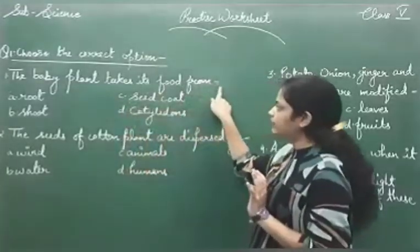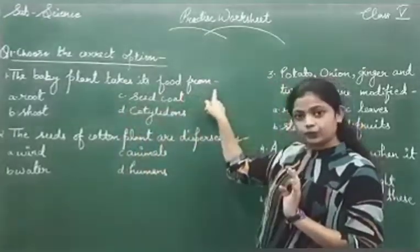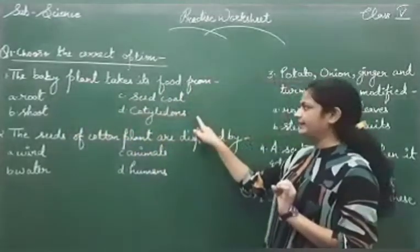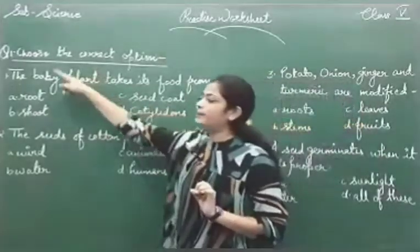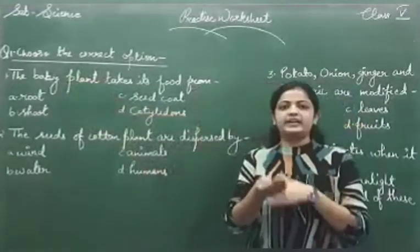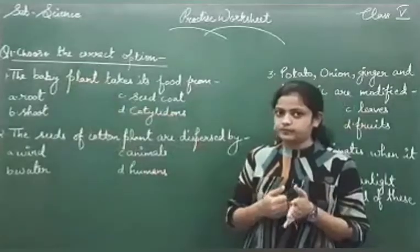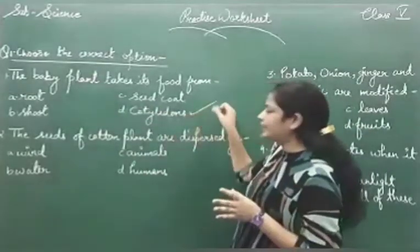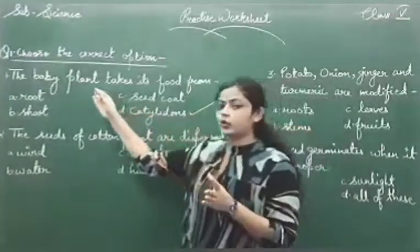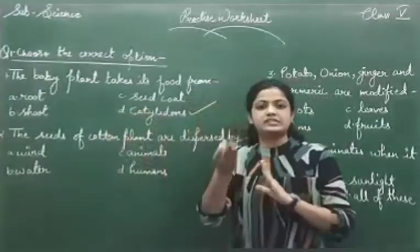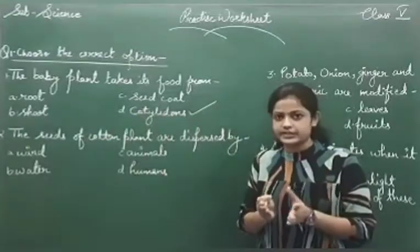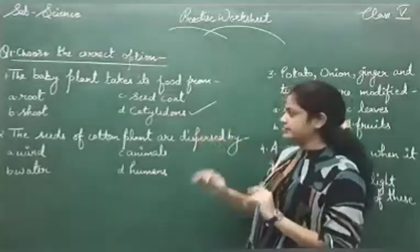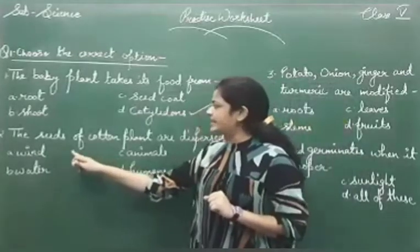The first question is: the baby plant takes its food from — root, shoot, seed coat, or cotyledons? The baby plant, the seedling, cannot prepare its own food because it is very young. So it depends on the food which is stored in the cotyledons. Until and unless it starts its process of photosynthesis, it depends on the food stored in the cotyledons.